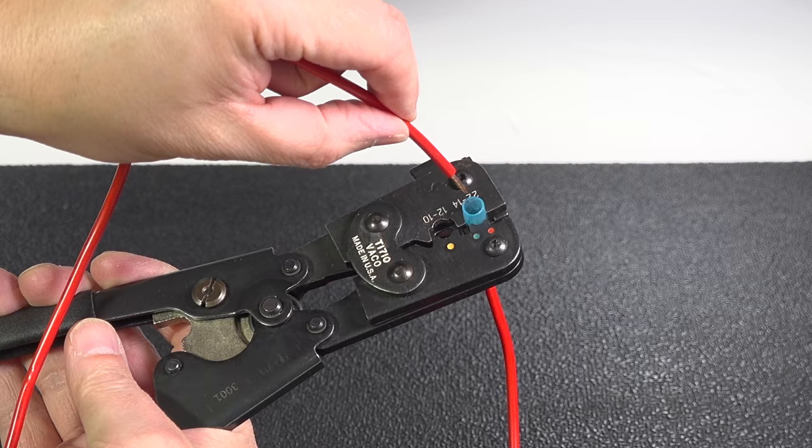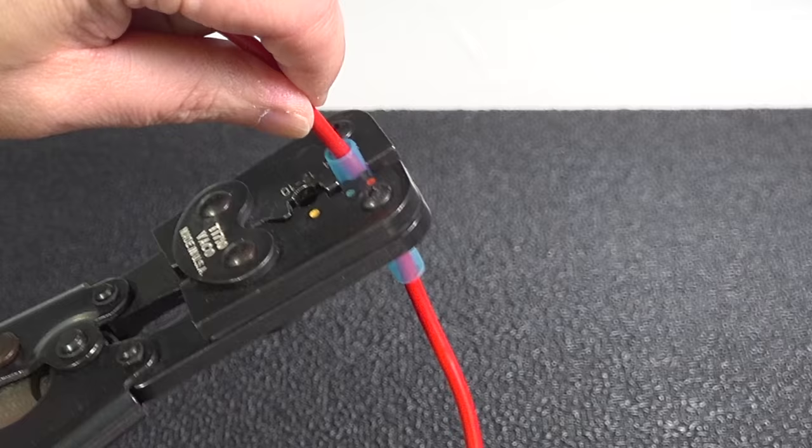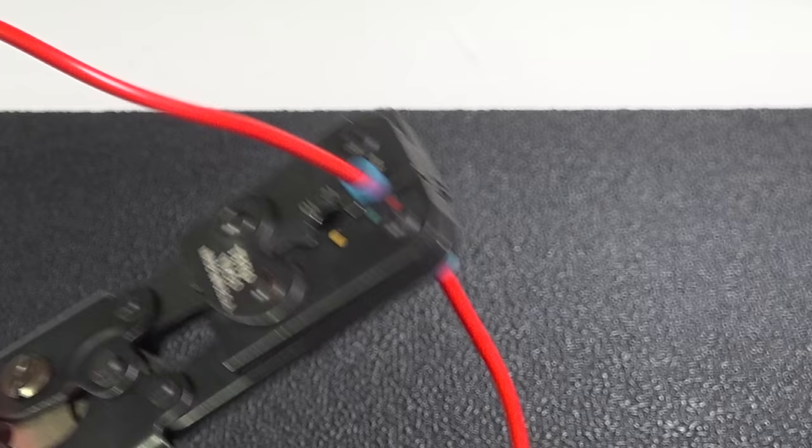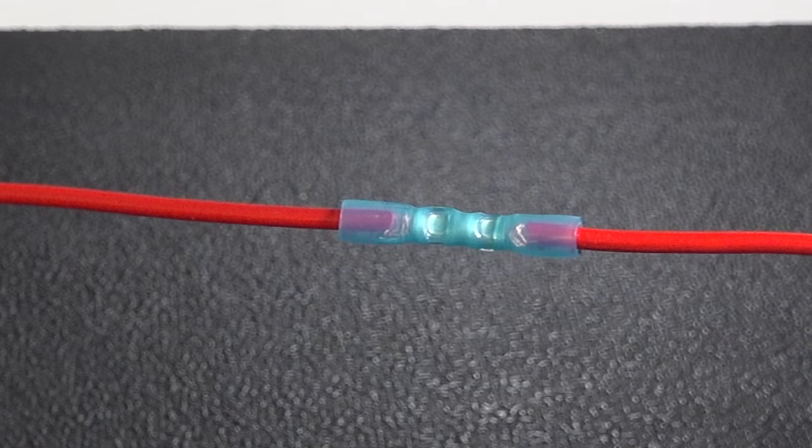But these have some common problems as well. Many people will insert too small of a wire, and then even after they crimp it, the wire will just easily pull out. But sometimes you don't notice it until after you've installed it, and then it's too late.